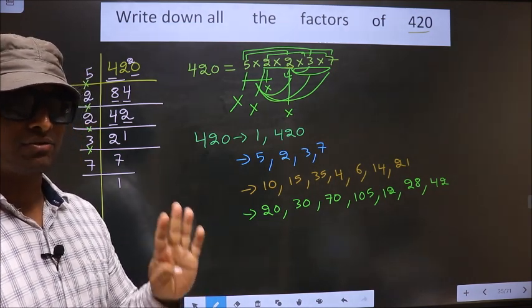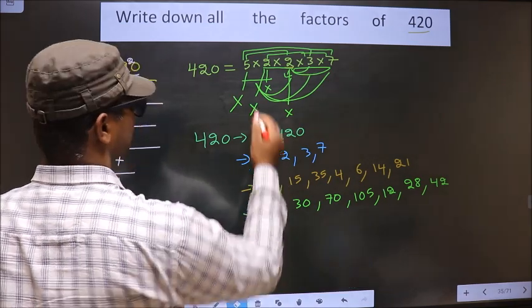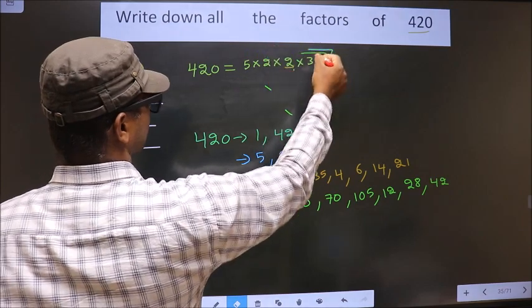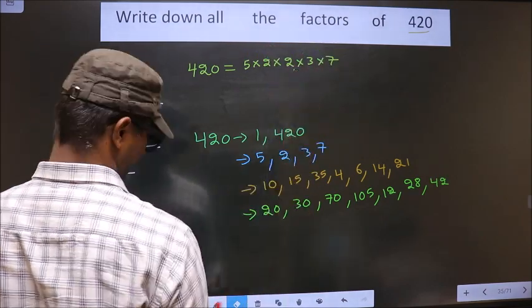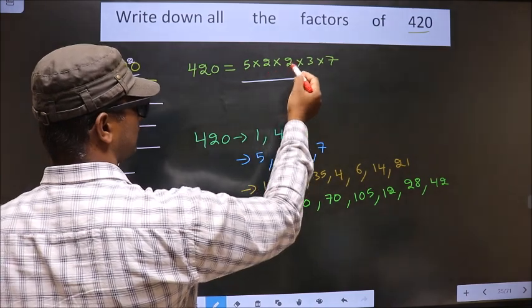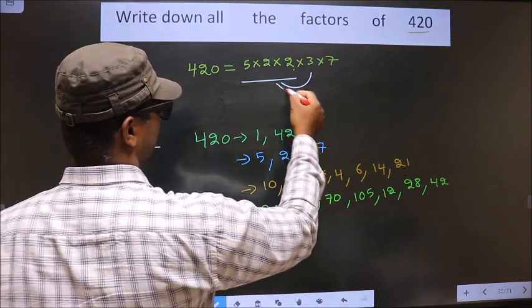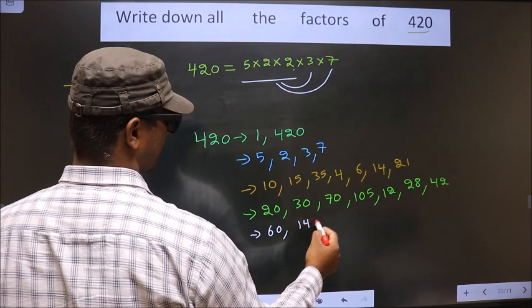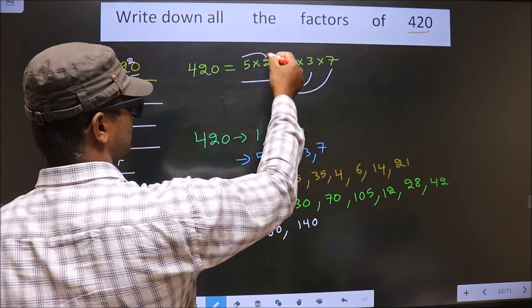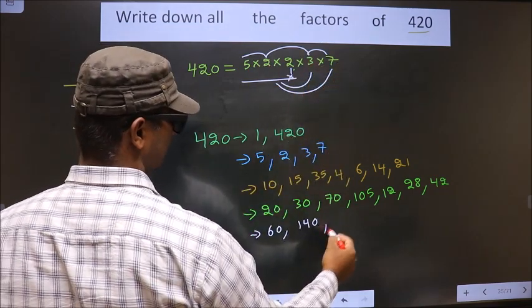Now you take a combination of 4 numbers. First I fix these 3 numbers: 5 times 2 is 10, 10 times 2 is 20, and now combine with 3 to get 30, and 30 times 7 is 210. Now leave one 2: 5 times 2 is 10, 10 times 3 is 30, and 30 times 7 is 210.